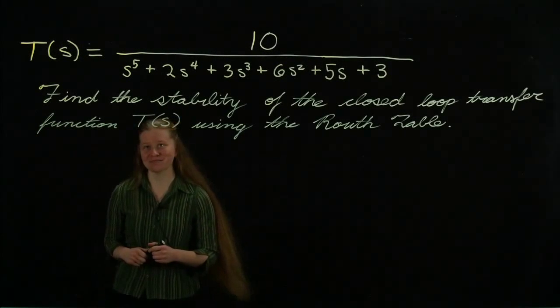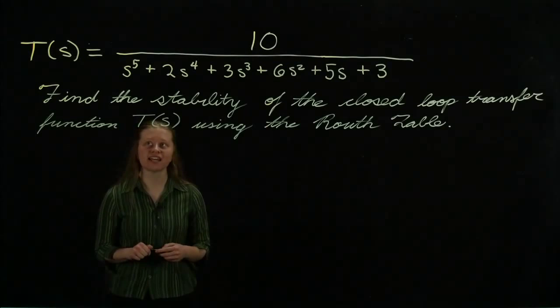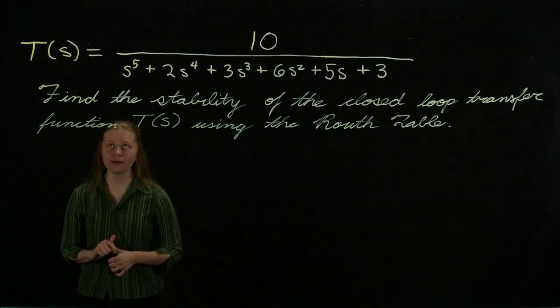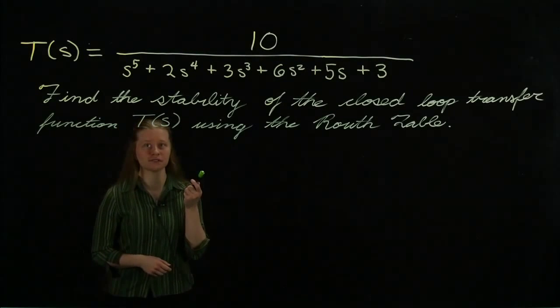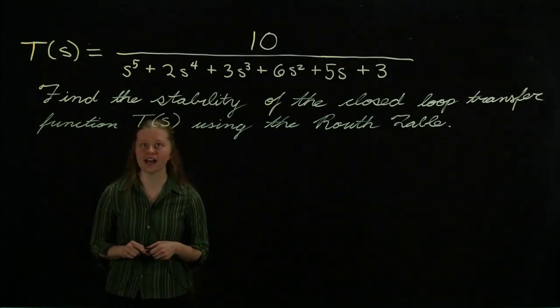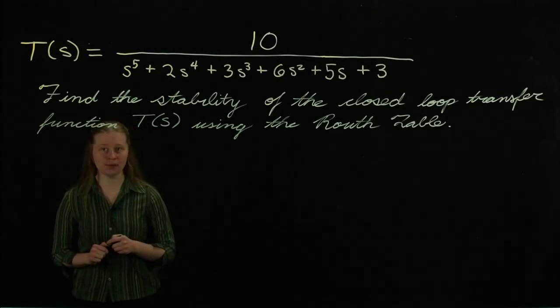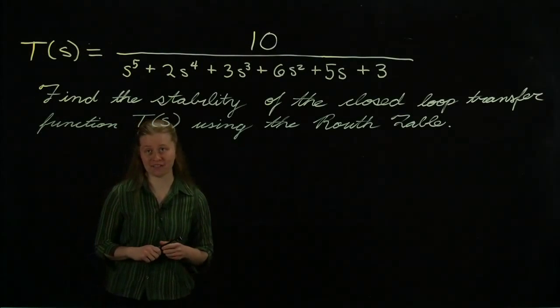Hi everybody. I'm Kat with Eta Kappa Nu, and today we're going to do a systems analysis problem. We have a closed-loop transfer function T of S, and our goal is to determine the stability using the Routh table.